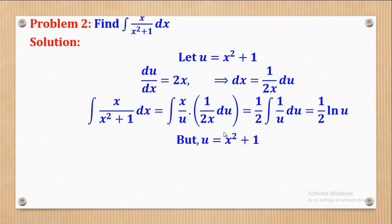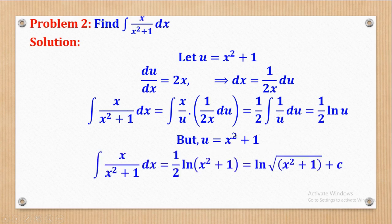Since we introduced u ourselves, we substitute back, recalling that u equals x squared plus 1. This gives one half · ln(x squared plus 1). The one half can be brought inside as a power, so the answer becomes ln of the square root of x squared plus 1, plus c. Don't forget the constant of integration.